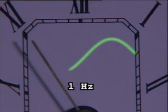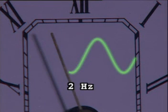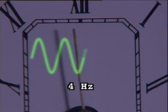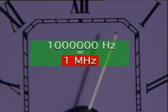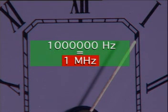One hertz is one wave per second. Two hertz is two waves per second. Four hertz is four waves per second. A million waves per second is called a megahertz.